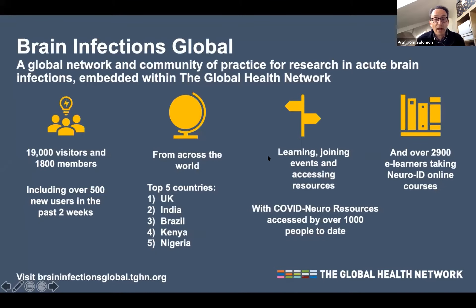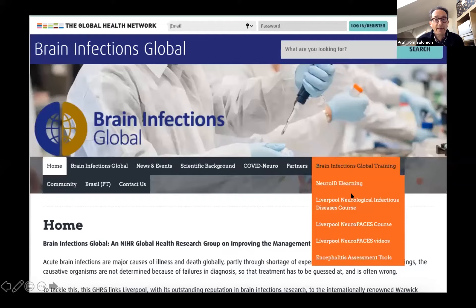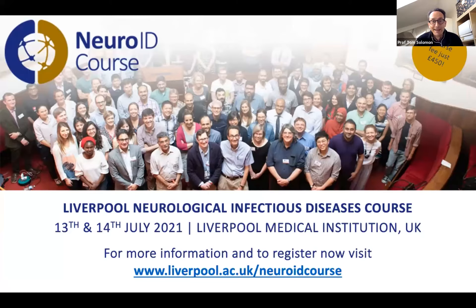Brain Infections Global has thousands of members around the world. We also do teaching and education and are supported by the Global Health Network. The tabs cover teaching and educational aspects including the free online Neuro ID e-learning modules and the Neurological Infectious Diseases course. We did a virtual course at the beginning of this year — that was the 2020 course. In 2021 we're going to be doing it in person in July. Registration is filling up rapidly, so if you're interested please register as soon as you can.